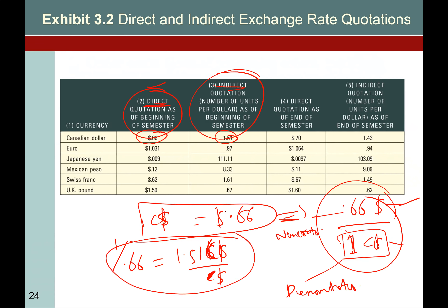In this numerator and denominator discussion, just remember that direct quotation means the price is written in the form of dollar. Indirect quotation means the price is written in the form of the currency you are dealing with. In indirect quotation, everything is divided in terms of dollar. In direct quotation, the currency would be in the denominator and dollar would be in the numerator.